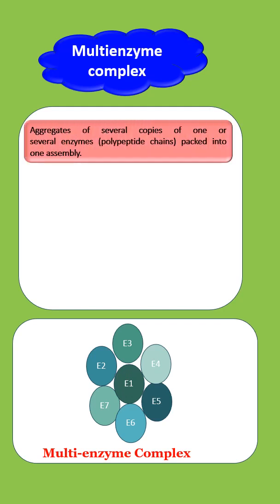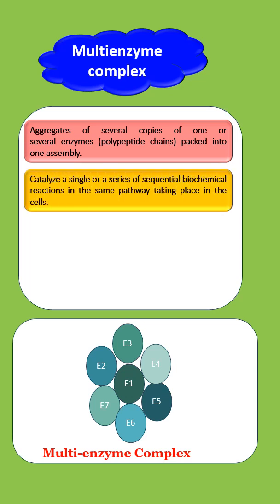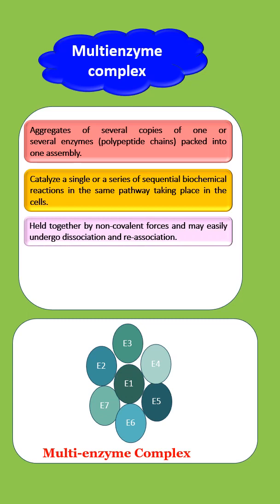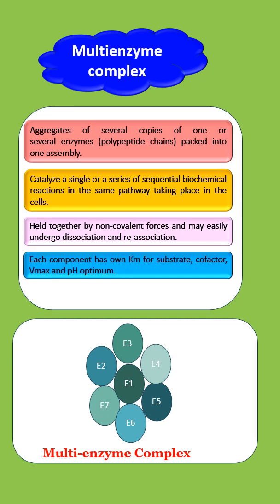Multi-enzyme complexes are aggregates of several copies of one or several enzymes or polypeptide chains packed into one assembly that catalyze a single or a series of sequential biochemical reactions in the same pathway taking place in the cells. The complex is held together by non-covalent forces and may easily undergo dissociation and reassociation. Each component has its own affinity for substrate, cofactor, Vmax, and pH optimum. They are also known as metabolones.